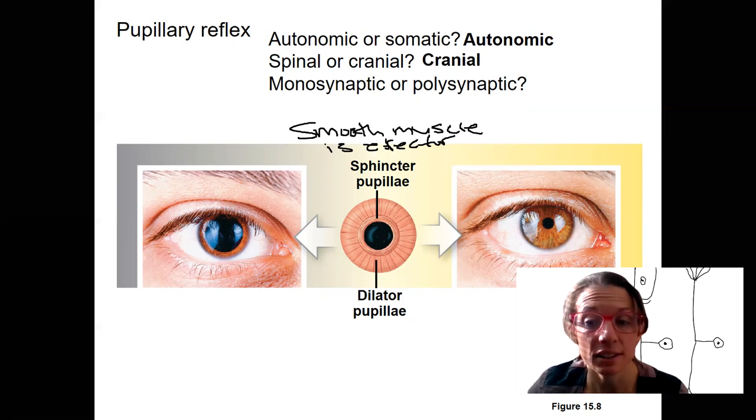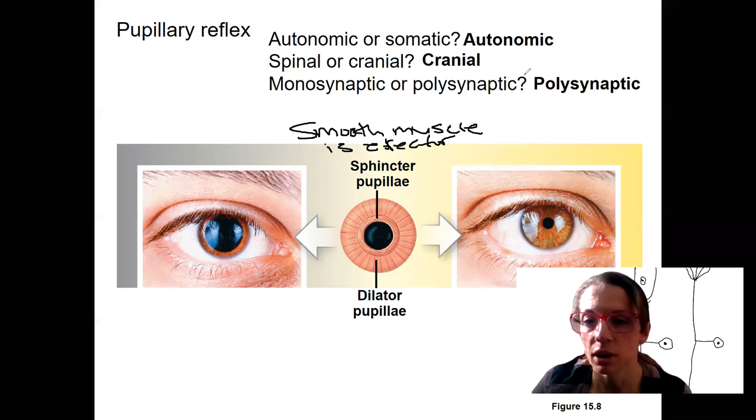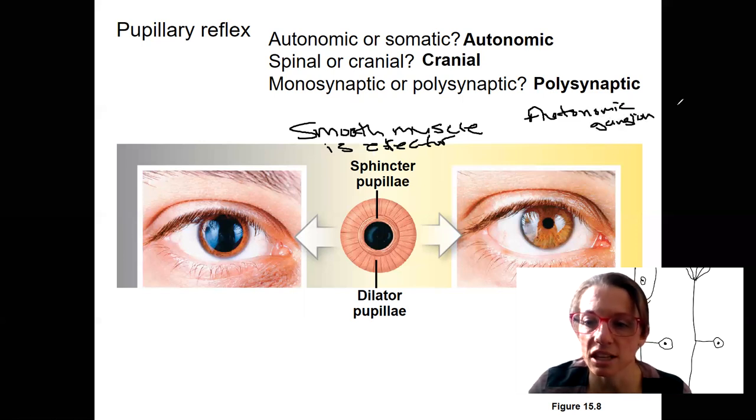Lastly, since this is an autonomic reflex, it's polysynaptic. We know that there is an autonomic ganglion. So there has to be more than one synapse in this pathway.